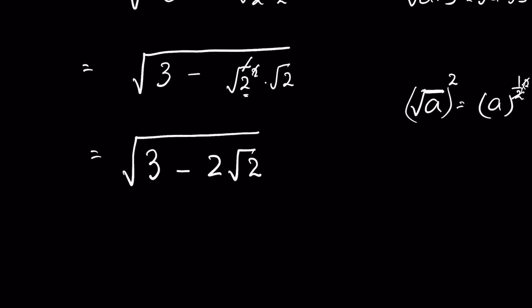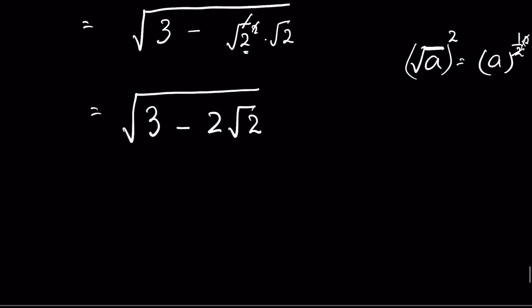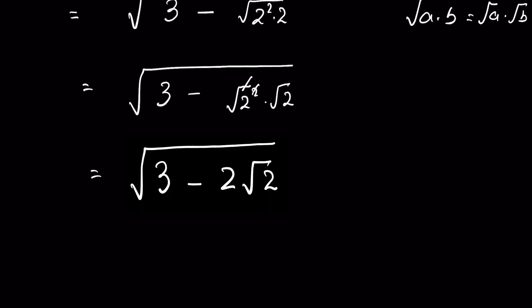Now to further simplify, we need to remove this outer square root. We know that when a is under square root it means a is raised to the power of 1 upon 2. Now if we square it, the exponent is multiplied by 2, so this removes the square root. So whenever we have to remove the square root, we square it.